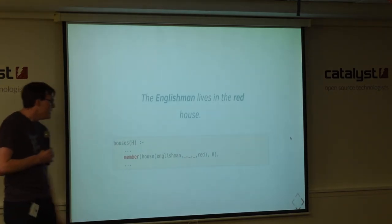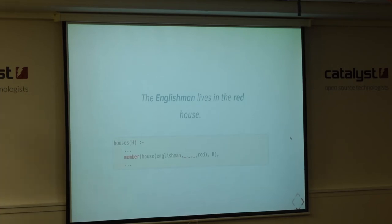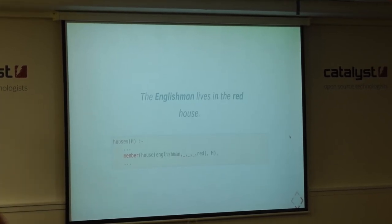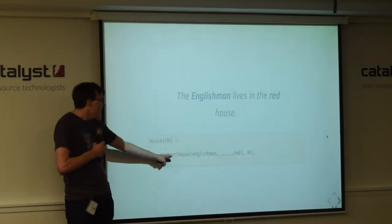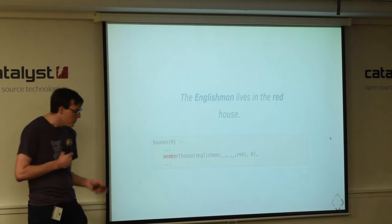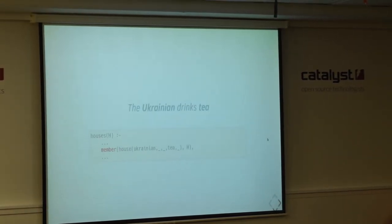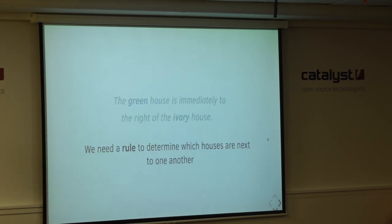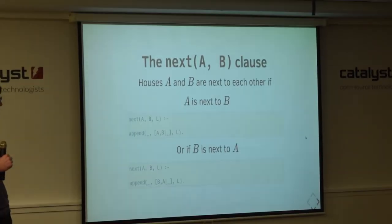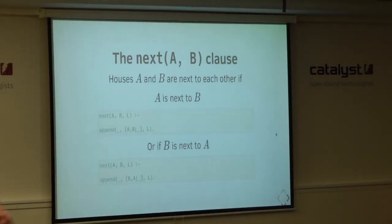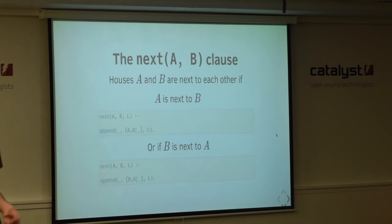Now, the member function around it, it's just saying, make sure that H is a list which contains a fact that meets these requirements. And so, we can iterate over all of the requirements. The Spaniard owns the dog. Coffee is drunk in the greenhouse. The Ukrainian drinks tea. Until we get to this one, the green house is immediately to the right of the ivory house. We need to define a rule for houses being next door to each other.